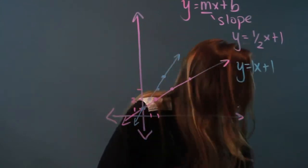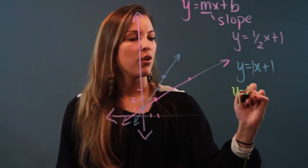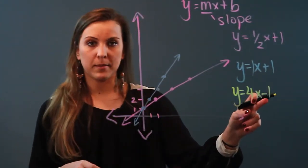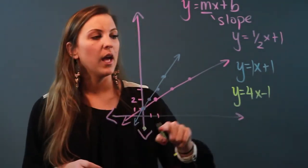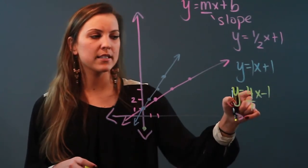I'll do one last equation for you. If we have y equals 4x minus one, that means my y-intercept is negative one, so my line is going to hit the y-axis right here at negative one. From there, my slope is four, which I can rewrite as four over one, so it's rising four and running one.